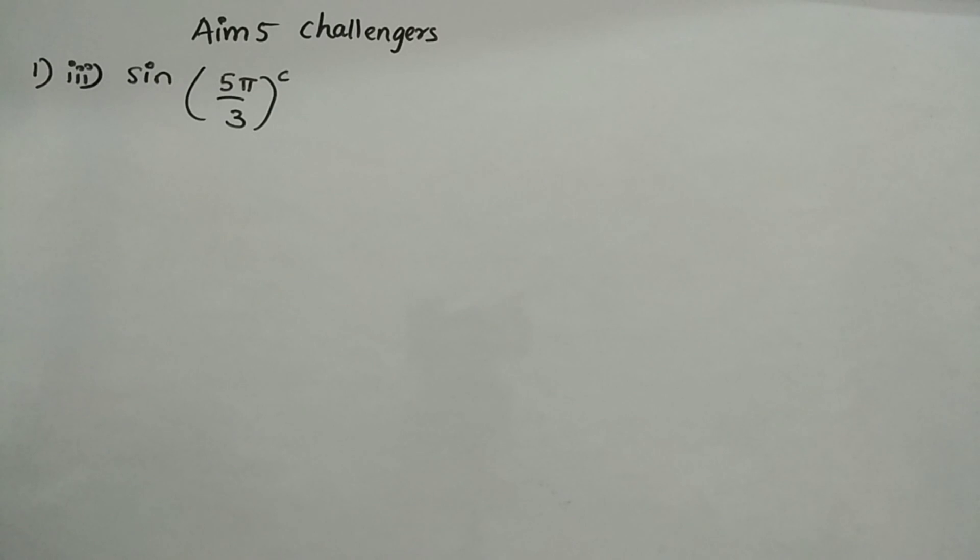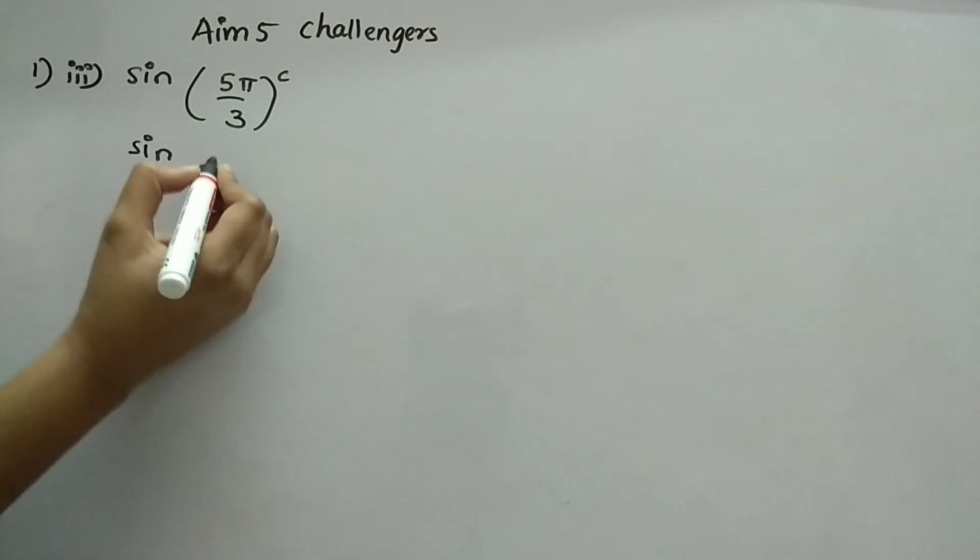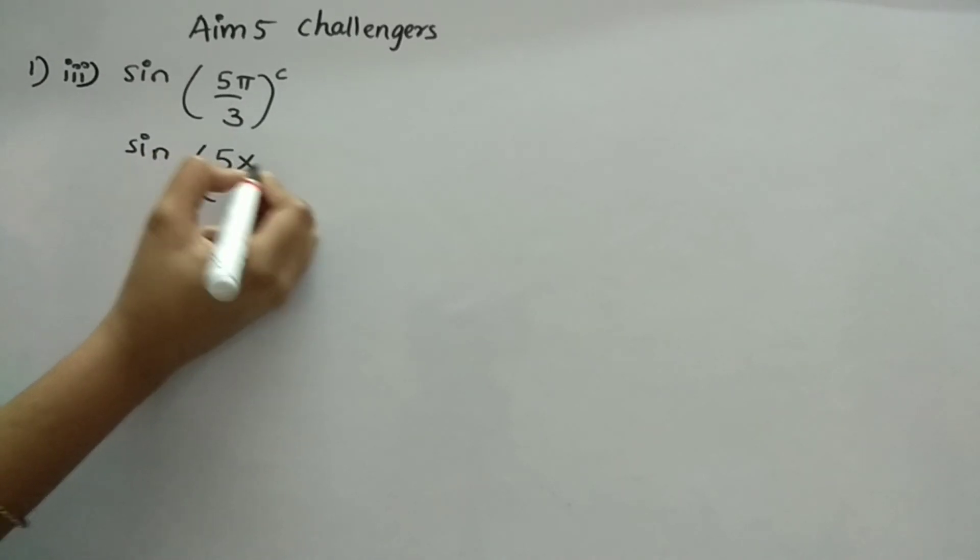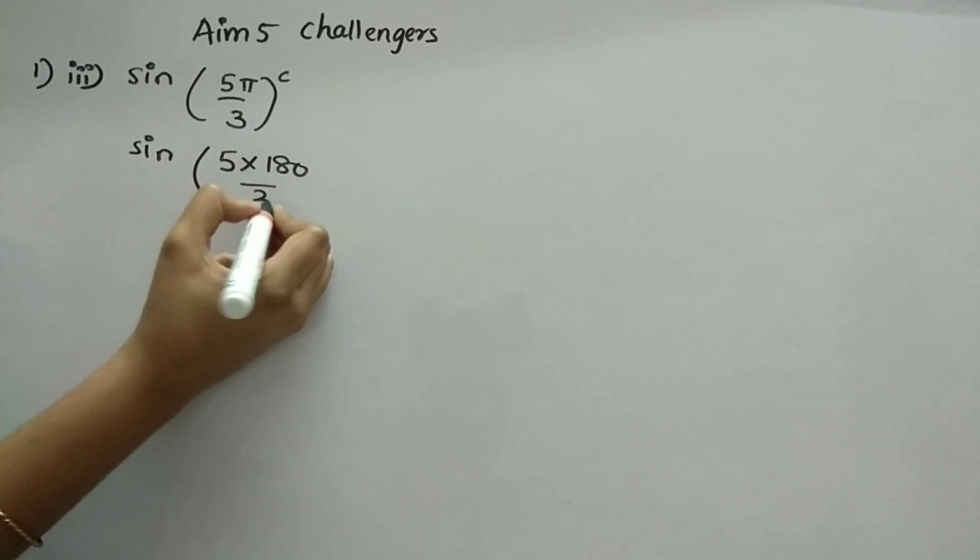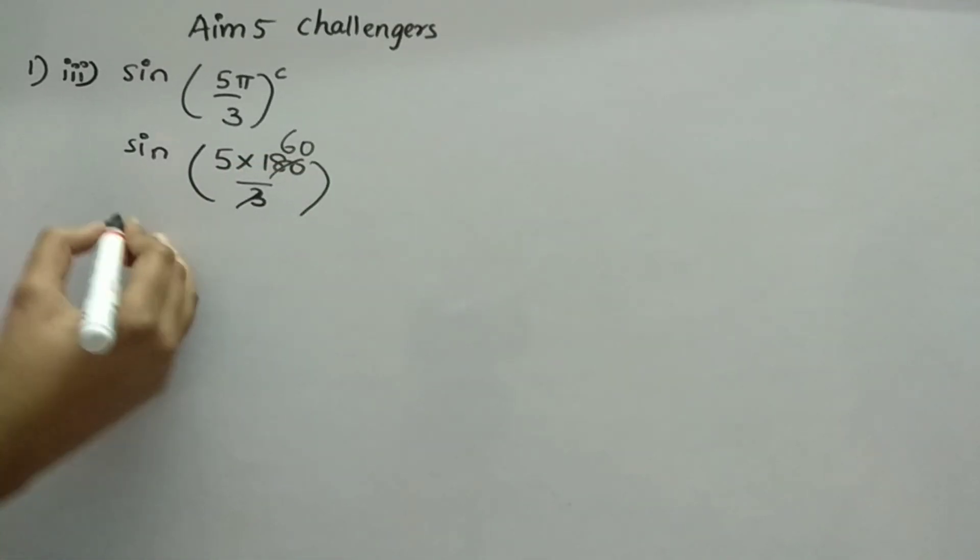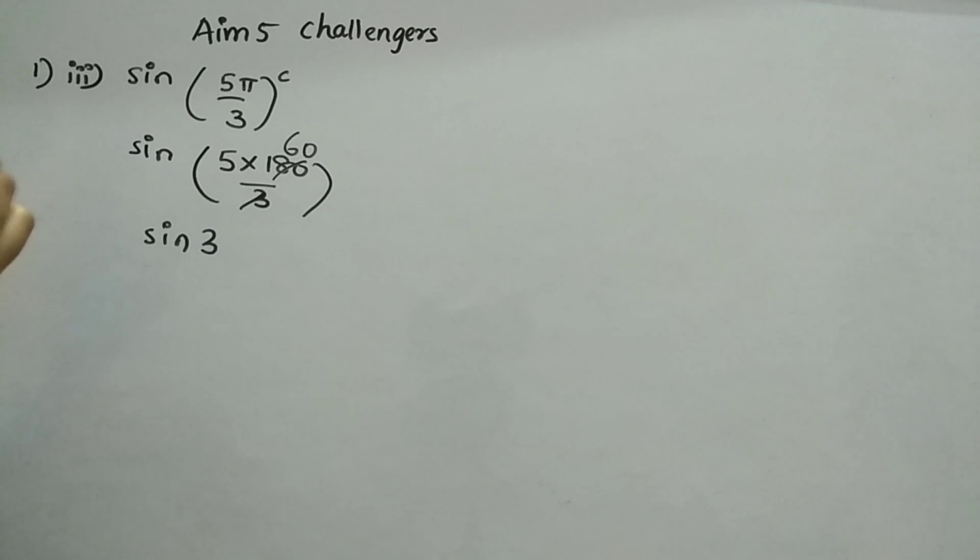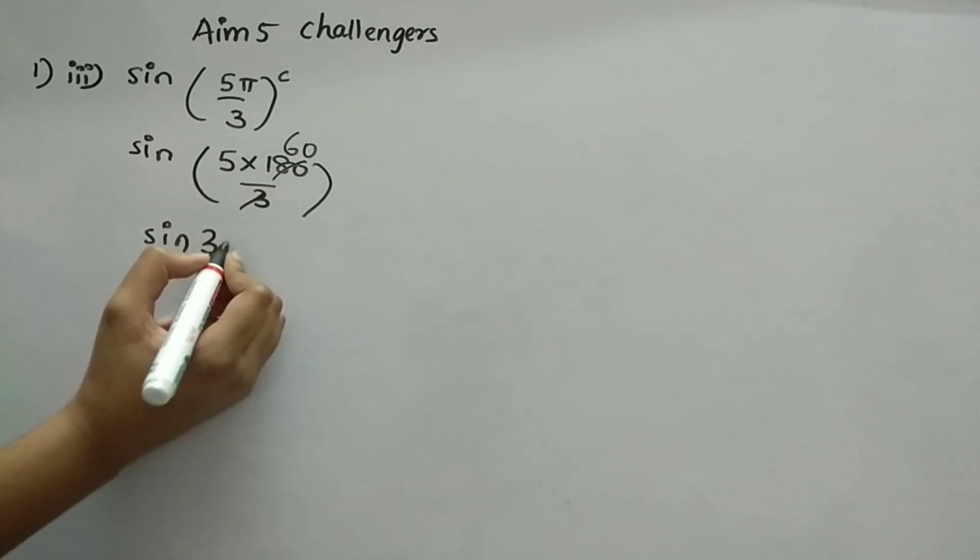Now, this pi is nothing but 180. First we have to simplify for getting the angle first. So, 5 into 180 by 3. Then, 3, 6, 18. So, 60. Now, it is 300 degrees.